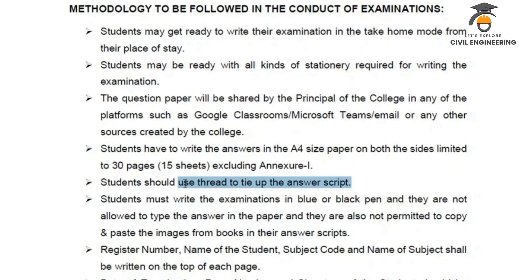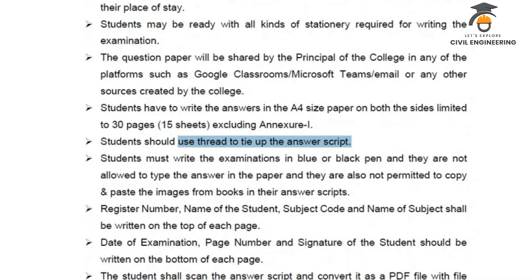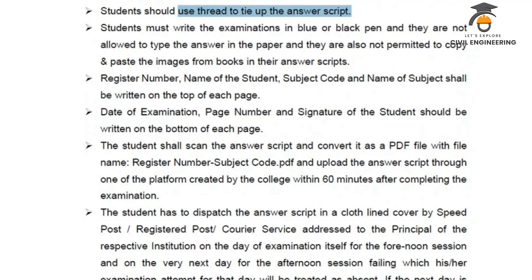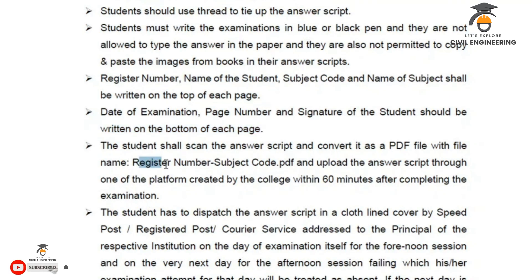Students should use thread to tie the answer script. Students must write the examination in blue and black pen. The registered number and name of the subject should be on one page. Date of the examination, page number, and signature of the student should be written at the bottom of each page. The student shall scan the answer script and convert it as a PDF file with the file name: registered number, subject code dot pdf.